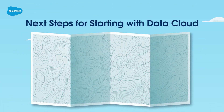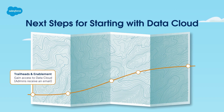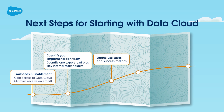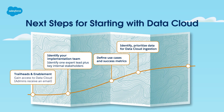As we wrap up, let's look at some high-level next steps for getting started with Data Cloud. Review enablement resources and gain admin access to Data Cloud. Identify your implementation team, including internal stakeholders and an experienced Data Cloud implementation partner or services expert. Define your use cases and Data Cloud success metrics. Discuss what you want to achieve with Data Cloud and how you'll know if it's a success. Your Data Cloud is only as strong as the data you feed into it, so be intentional and strategic about what data you prioritize for Data Cloud ingestion.